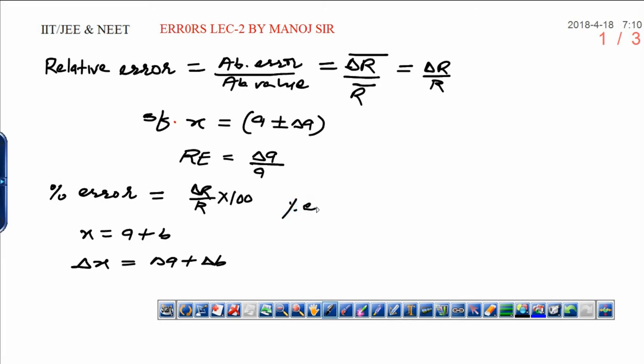Now, if you want to calculate the percentage error of addition, percentage error of a plus b addition, that could be written as delta a plus delta b upon a plus b into 100. This is the shortcut technique through which you can solve various problems which are based on addition and you need to calculate the percentage error. Let's see one example here.